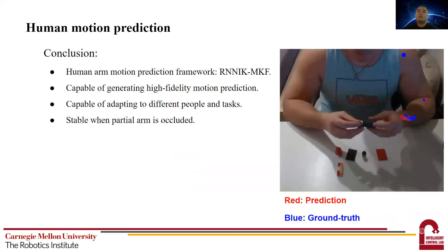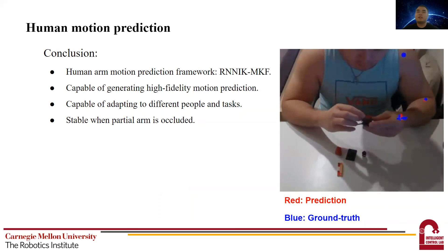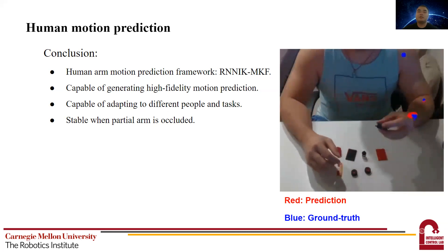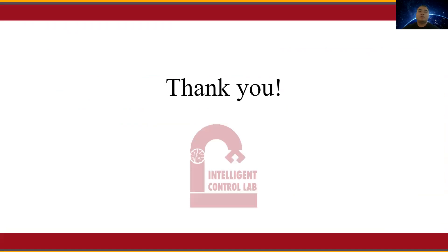In conclusion, our work proposed a human arm motion prediction framework which combines data-driven learning-based RNN and the model-based IK. The experiments show that our method is capable of generating high fidelity motion prediction. With the MKF online adaptation, this framework can adapt to unfamiliar people and tasks and also maintain the high fidelity performance. Lastly, it is stable when partial arm is occluded. And that leads to the end of my presentation. Thank you very much for joining.